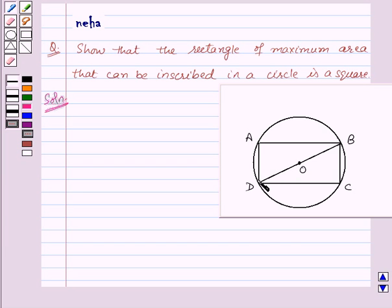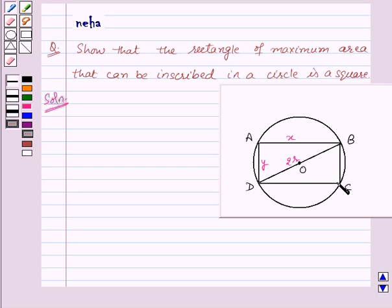The diagonal BD of rectangle ABCD is the diameter of the circle, so the length of BD is 2R. Now let us assume that X and Y are the sides of the rectangle ABCD.